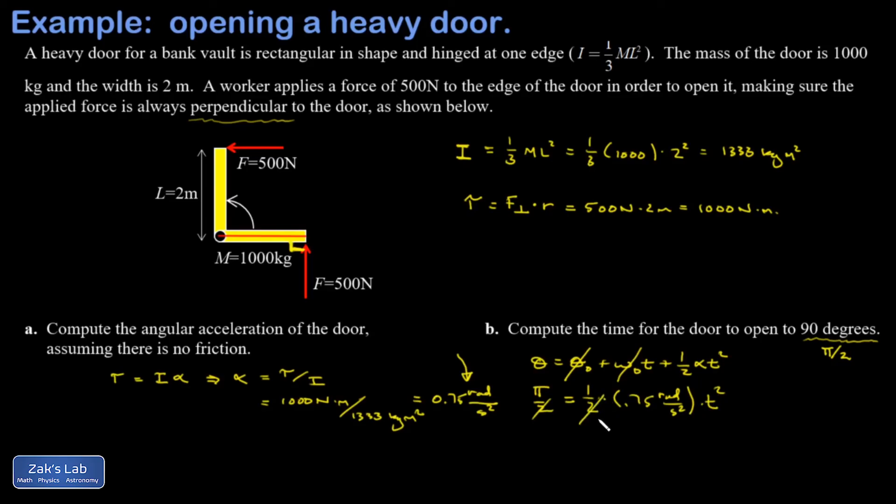I'm going to multiply both sides by two and clean it up in my calculator: pi over 0.75 square rooted. When I do that, I get the time to open this thing by 90 degrees is 2.05 seconds.